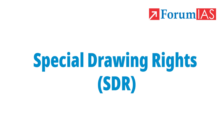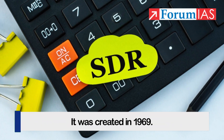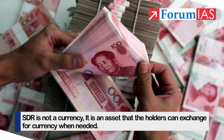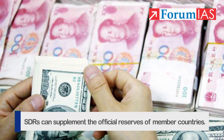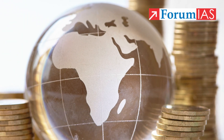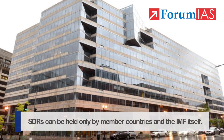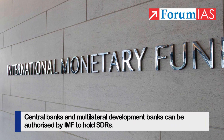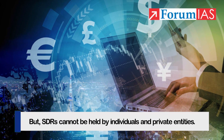Now let's talk about Special Drawing Rights, or SDRs. SDRs are an international reserve asset issued by the IMF, created in 1969. SDR is not a currency; it is an asset that holders can exchange for currency when needed. SDRs can supplement the official reserves of member countries and can be held only by member countries and the IMF itself. Central banks and multilateral development banks can be authorized by the IMF to hold SDRs, but SDRs cannot be held by individuals and private entities.